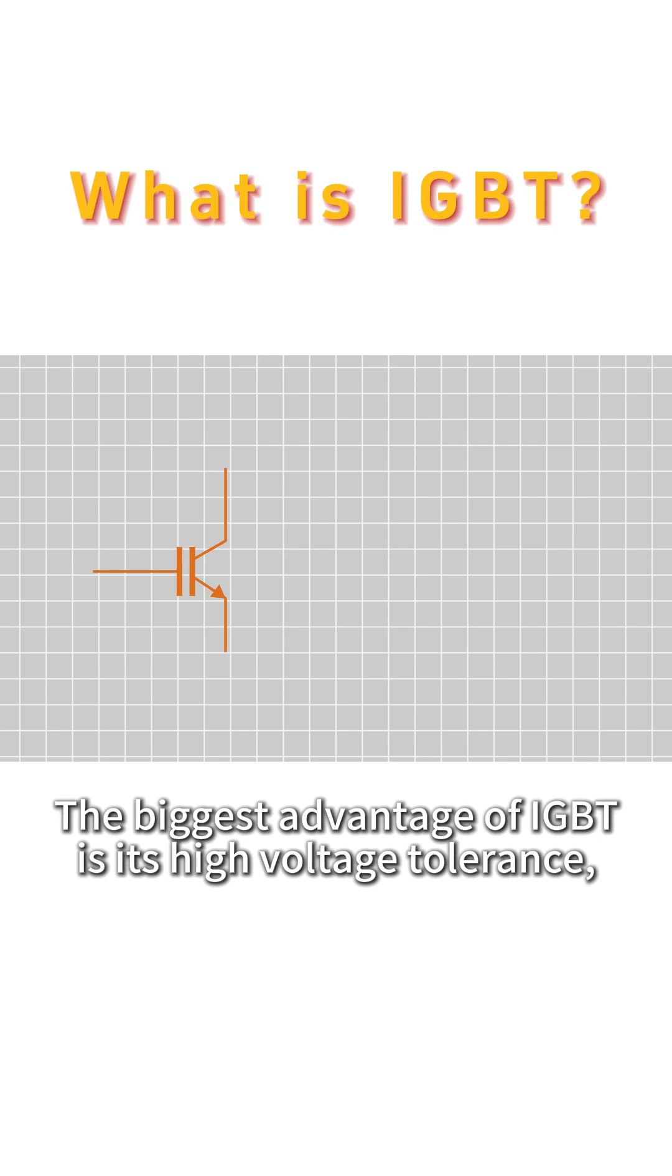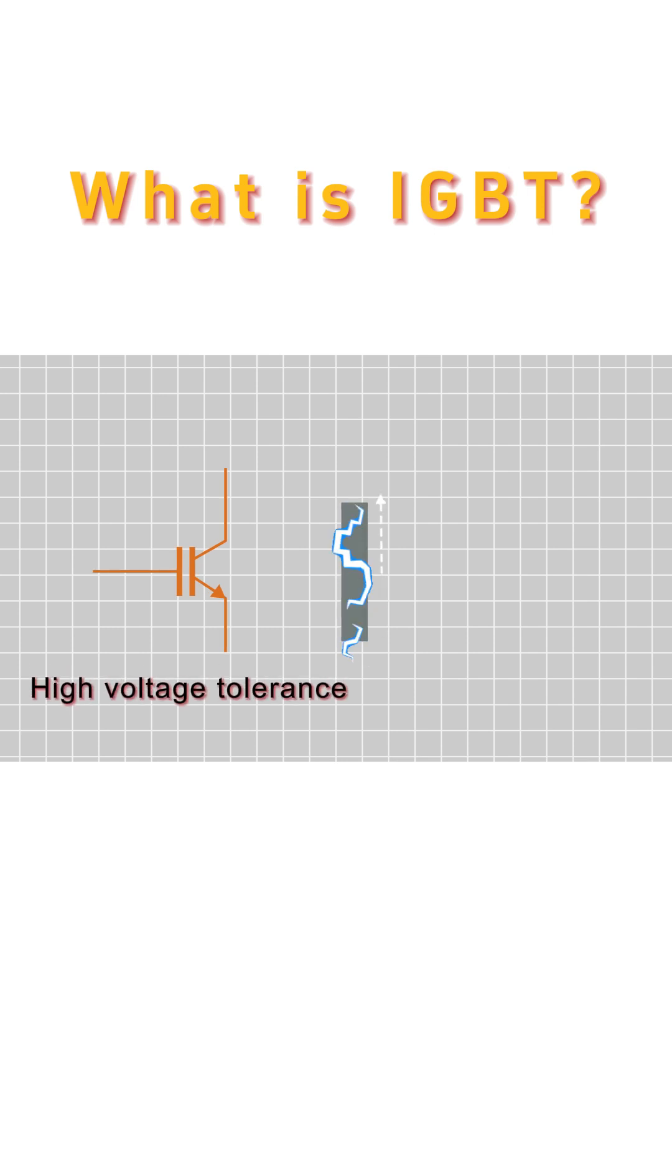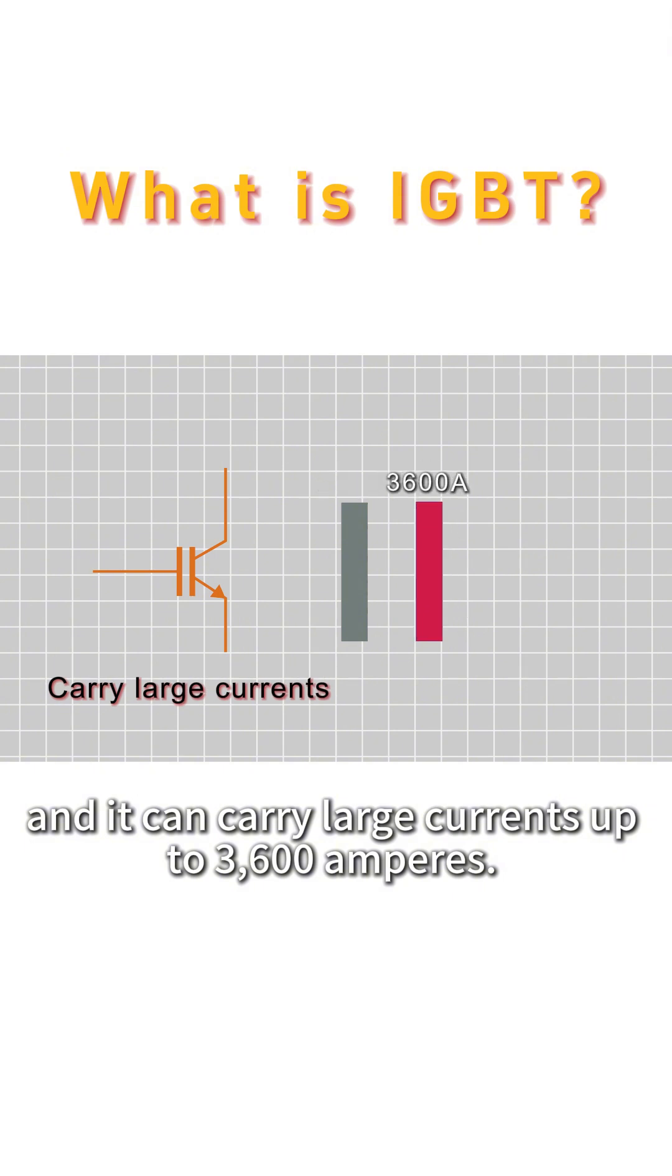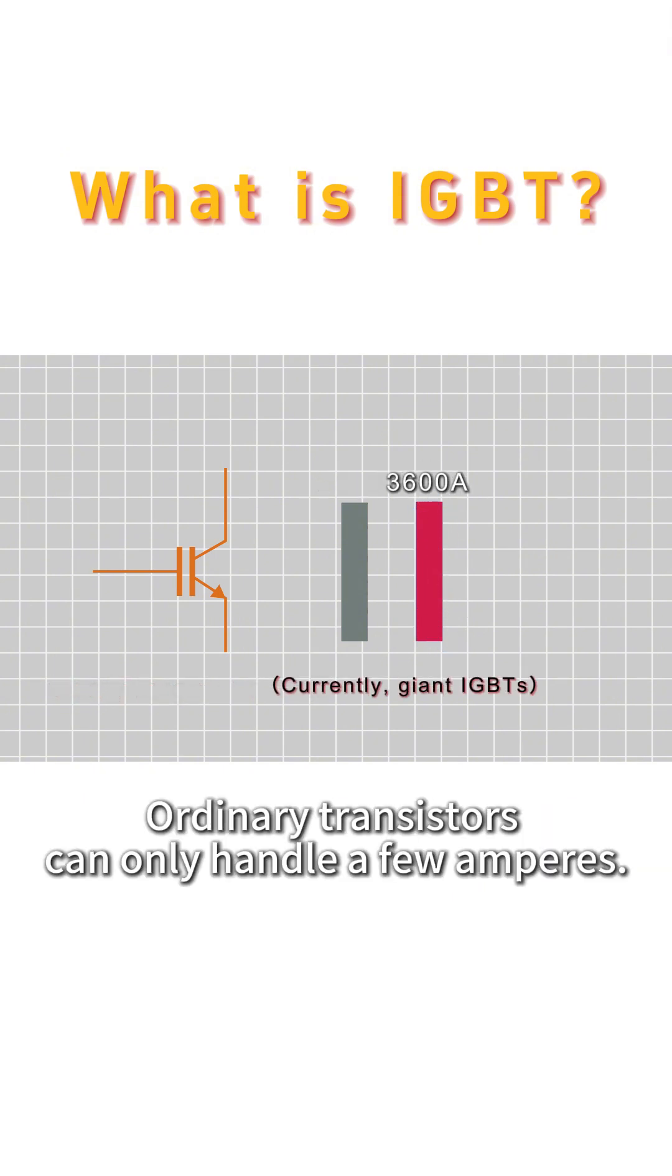The biggest advantage of IGBT is its high voltage tolerance, which can reach over 6,500 volts, and it can carry large currents up to 3,600 amperes. Ordinary transistors can only handle a few amperes.